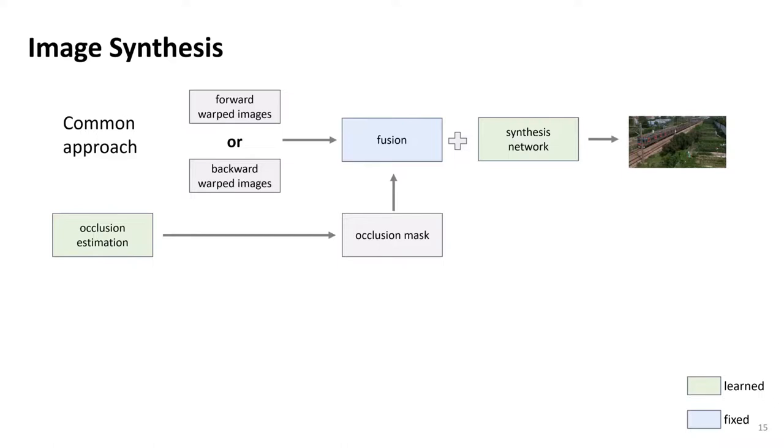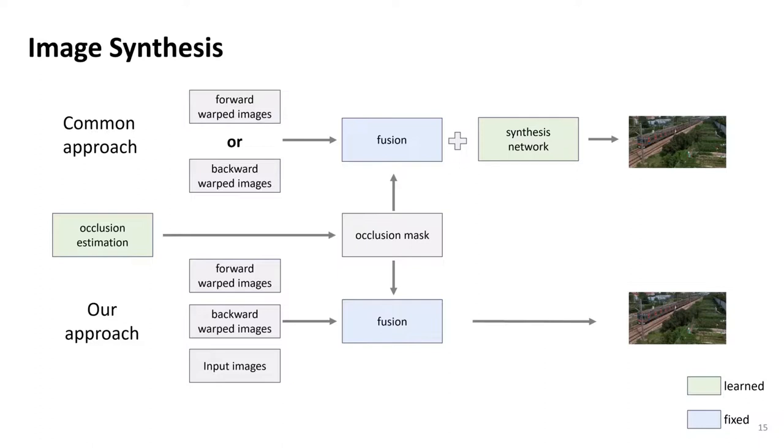A common approach to generate the final image is to either combine the forward warped images or the backward warped images with an occlusion mask and add a residual image to it, which is estimated by a costly synthesis network. However, we observe that the weighted combination of the intermediate warped images and the input images already gives a high-quality interpolated frame.